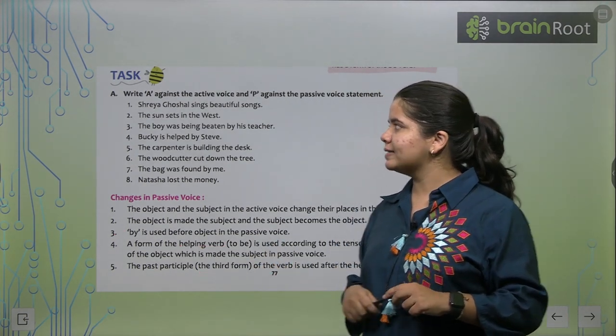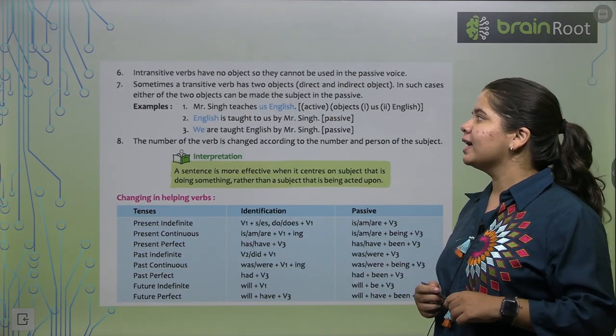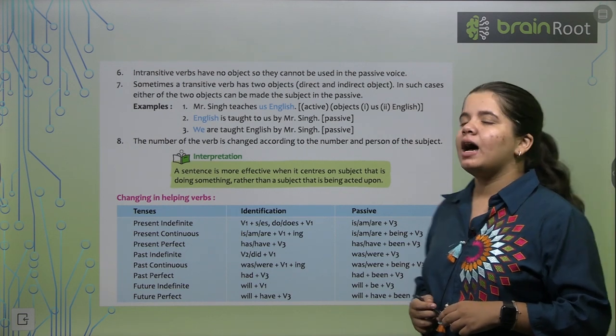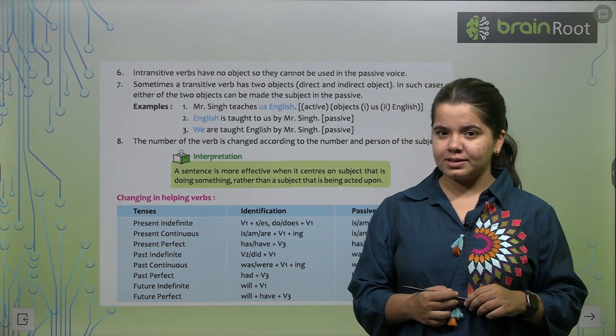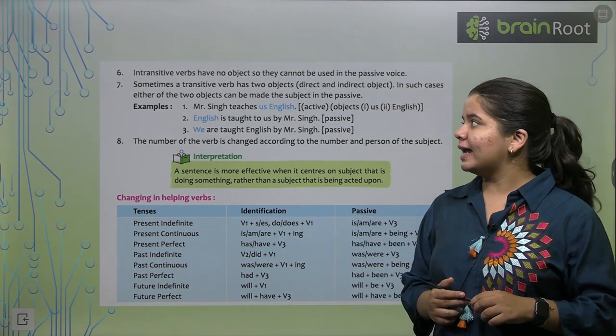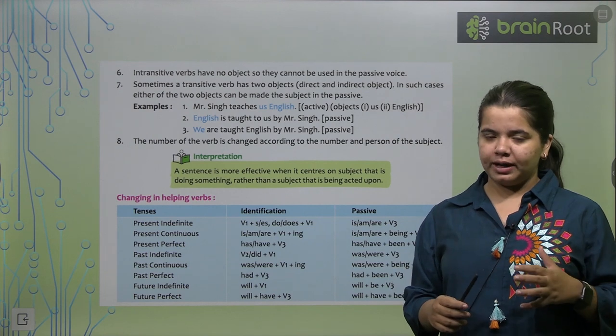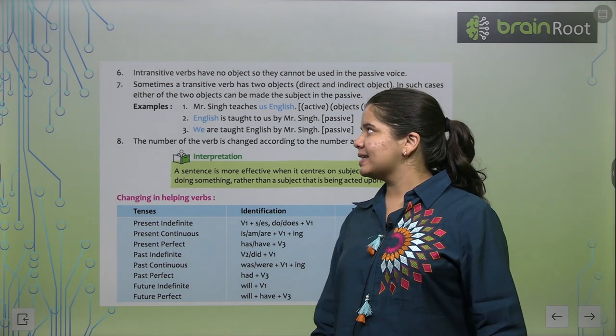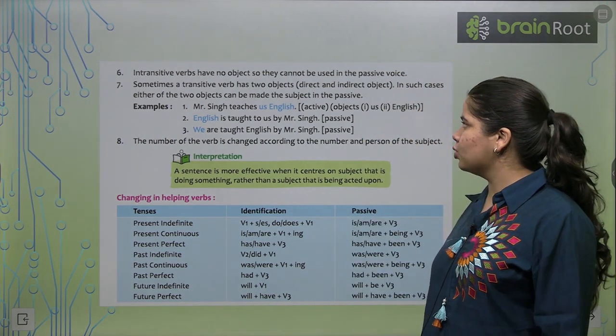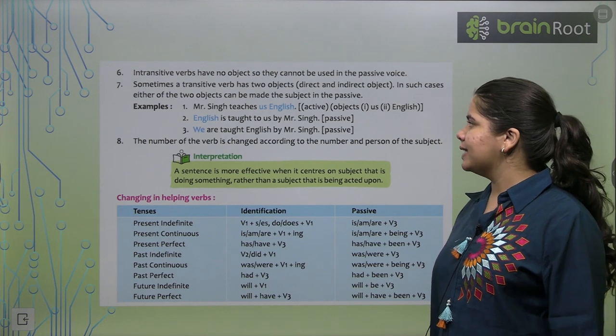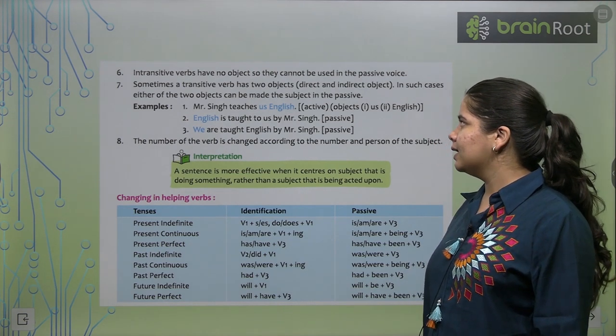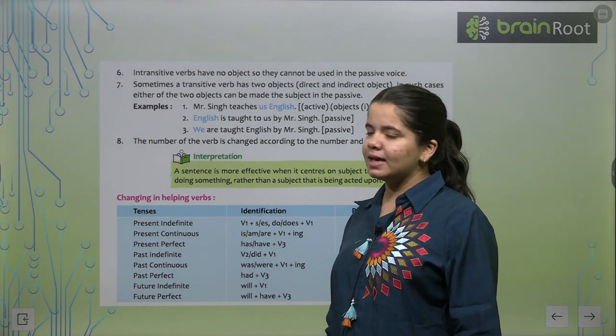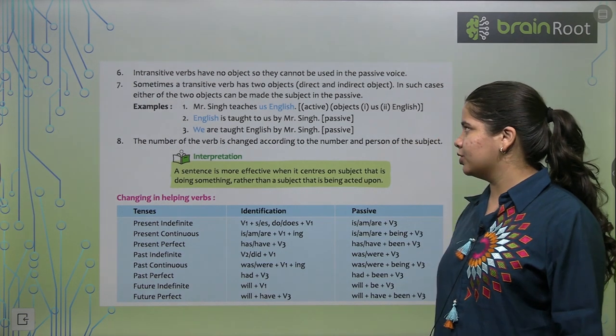Now, we are going to move ahead and see what we have next. Sixth point is, intransitive verbs have no object, so they cannot be used in passive voice. You must remember we studied in the last chapter, intransitive and transitive verbs. So intransitive verbs don't have any subject. You have to remember, because they are not used in the passive voice. Next, sometimes a transitive verb has two objects, direct and indirect object. In such cases, either of the two objects can be made the subject in passive voice.